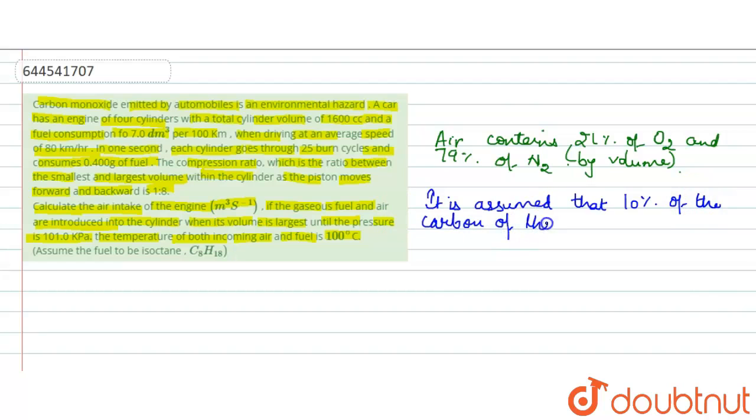of the fuel forms CO gas upon combustion. 10 percent of the fuel consumption, and N2 in the air remains inert here.